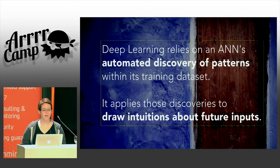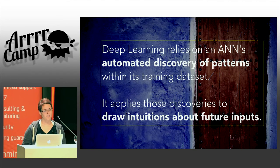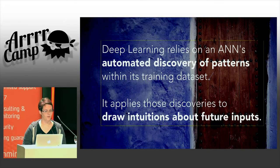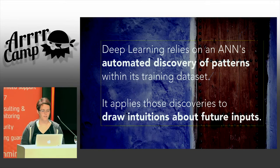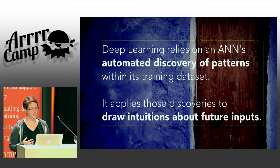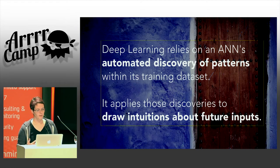Deep learning relies on artificial neural nets, automated discovery of patterns within a training data set, and then applies those discoveries to draw intuitions about future inputs. That's a little bit abstract to think about, so let's look at a really concrete example.